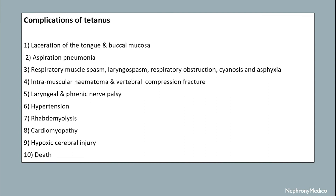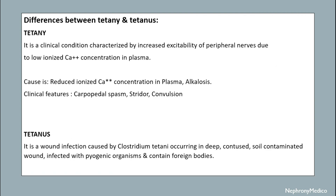Complications of tetanus include: laceration of blood, tongue, and buccal mucosa; aspiration pneumonia; respiratory muscle spasm; laryngospasm; respiratory obstruction; cyanosis and asphyxia; intramuscular hematoma; vertebral compression fracture; laryngeal and phrenic nerve palsy; hypotension; rhabdomyolysis; cardiomyopathy; hypoxic cerebral injury; and death.